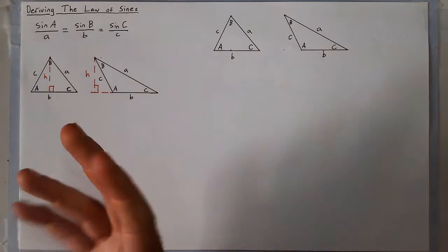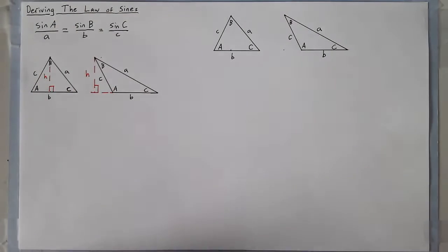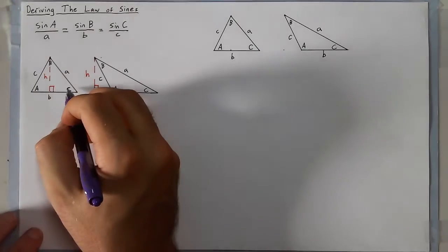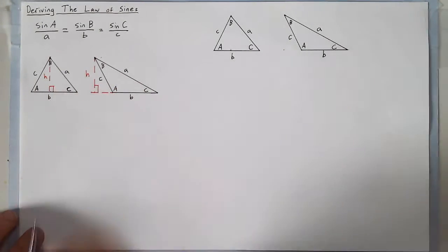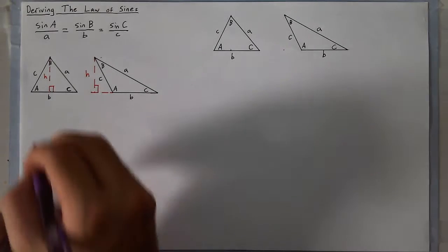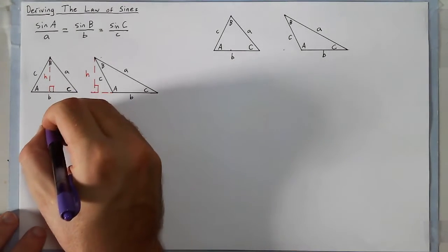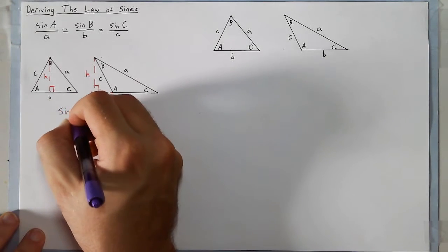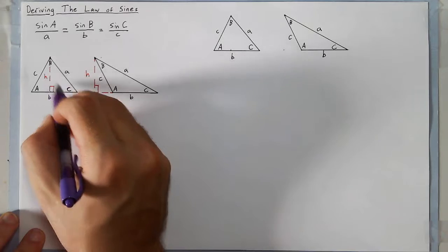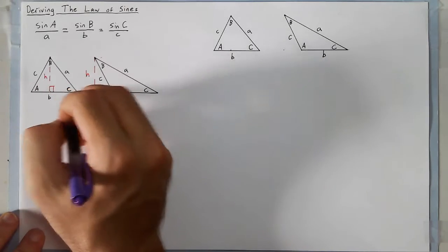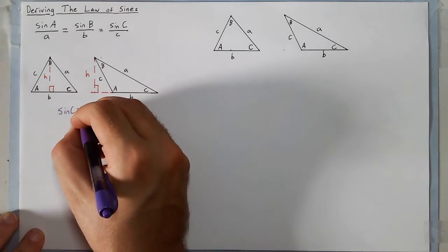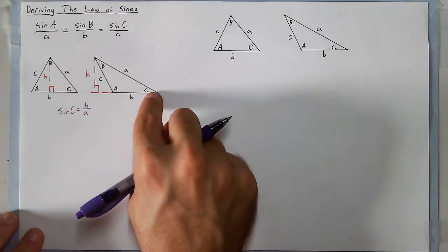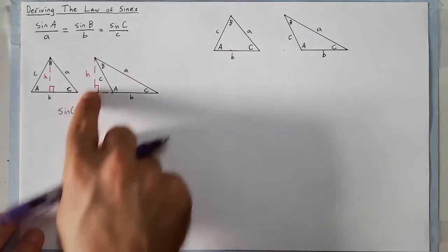Now, how do we derive the law of sines? We're going to use sine. The first thing I'm going to point out is that the sine of C for both of these triangles would be the same. Specifically, sine of capital C equals the opposite side H over a — this is true using the right triangle formed in both the acute and the obtuse triangle cases.